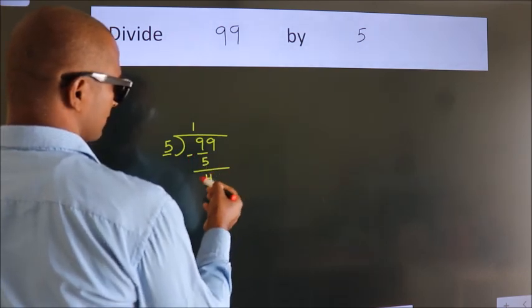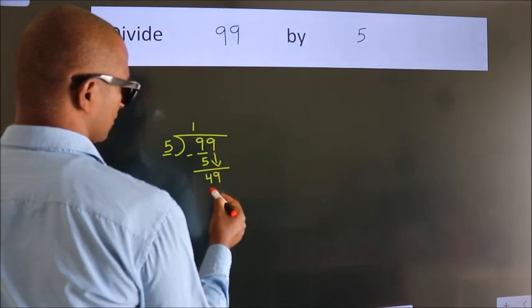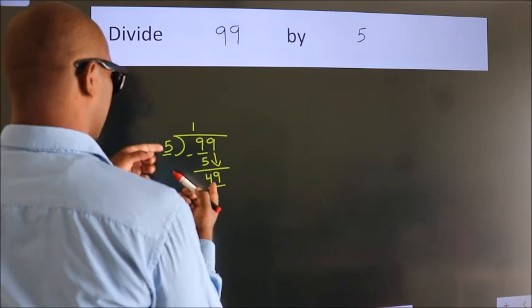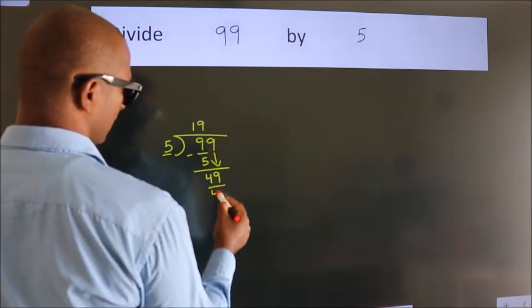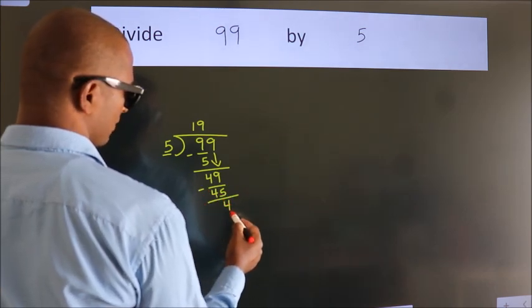After this, bring down the beside number. So 9 down, giving us 49. A number close to 49 in the 5 times table is 5 nines, which is 45. Now we subtract. We get 4.